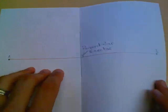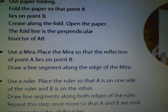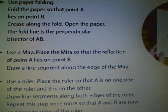The second part of the textbook says to use a mirror. A mirror is basically a reflective 90-degree surface. Now I'll get a piece of paper and show you the next method.